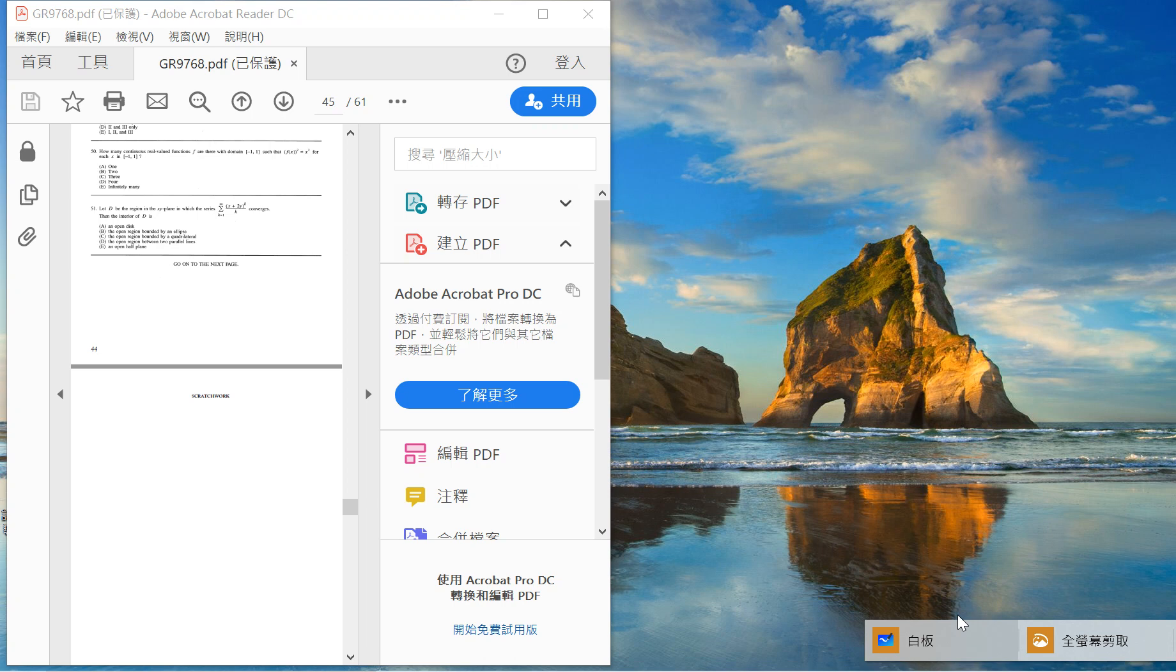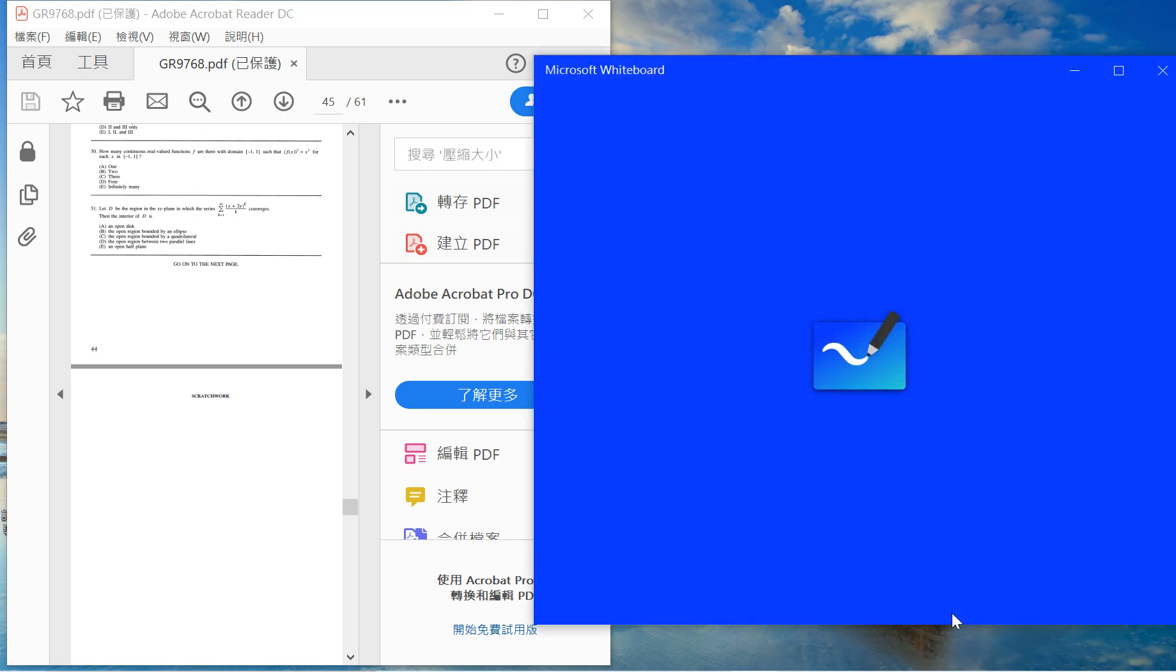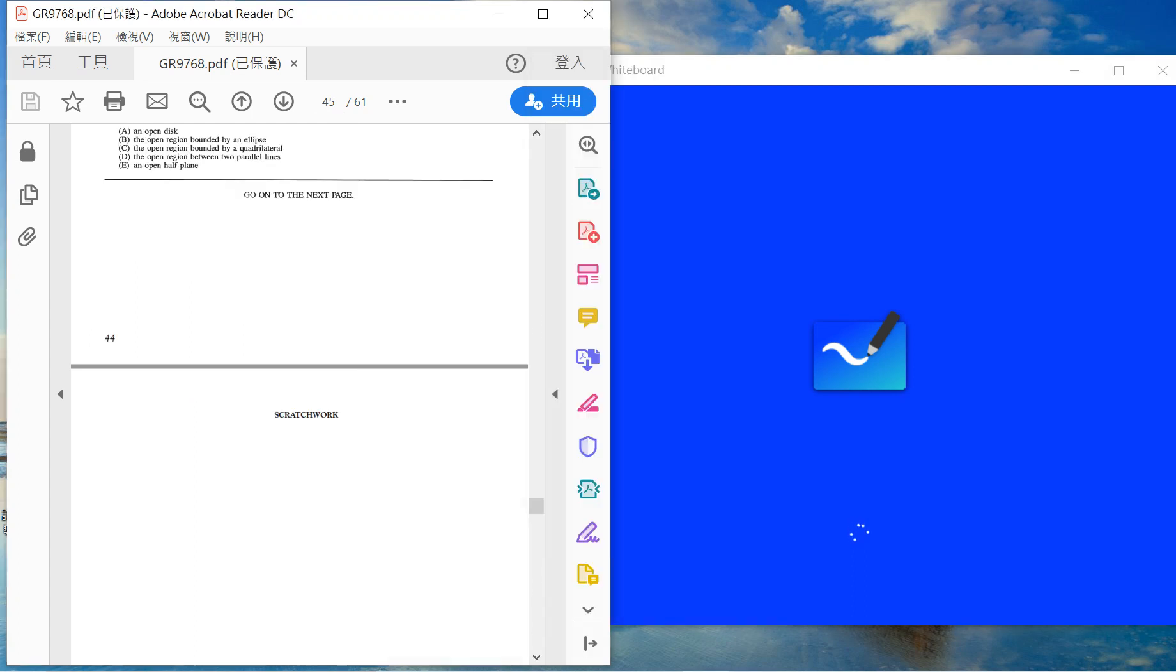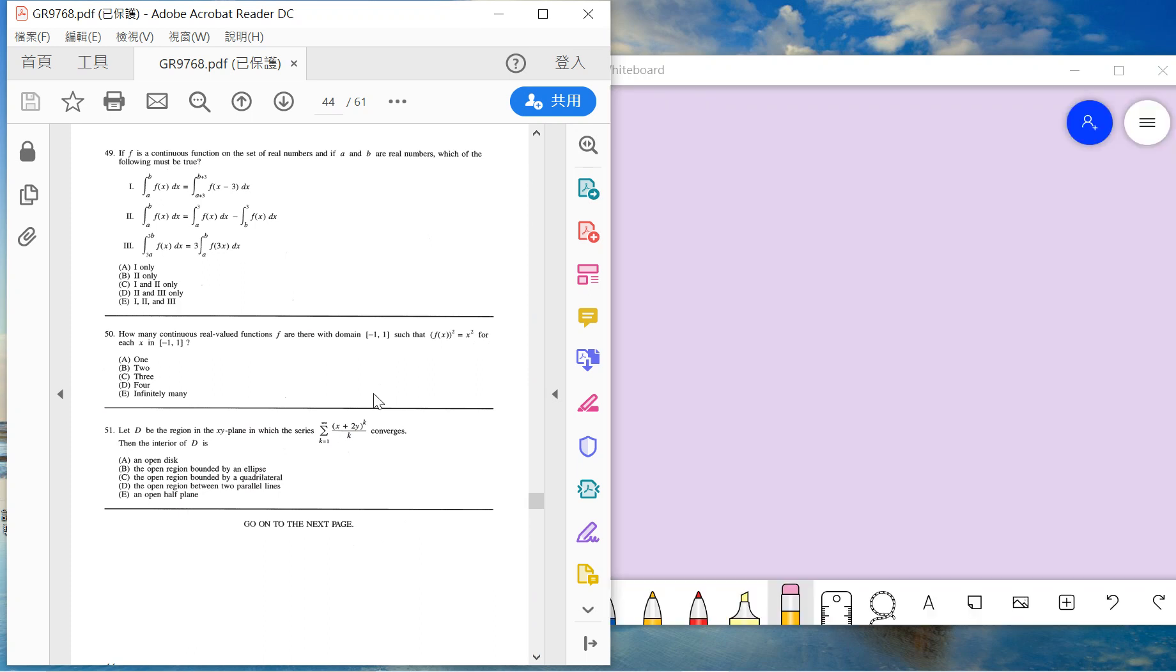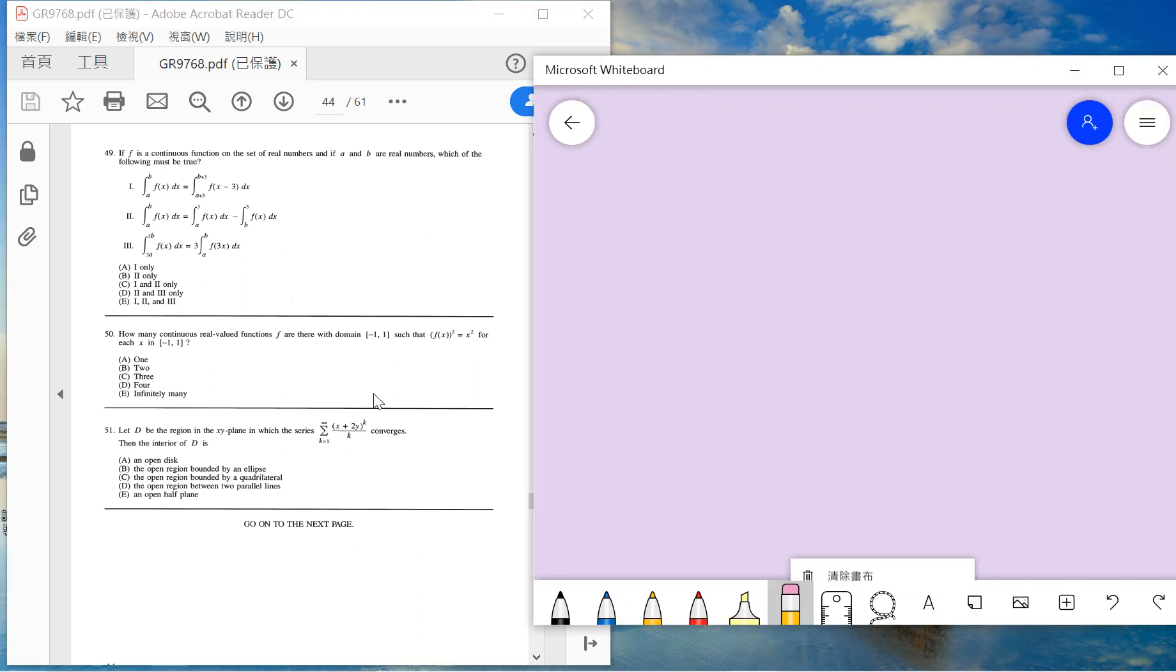So the way we solve it, we use the ratio test and test whether the region is what we want. So basically this is the region, the series.